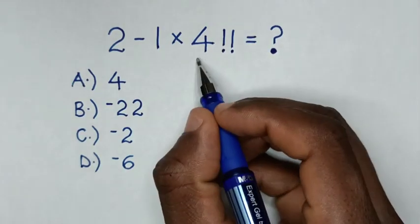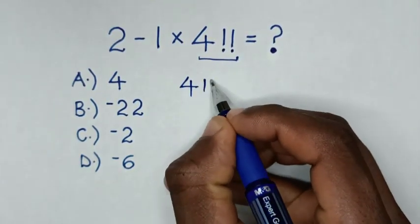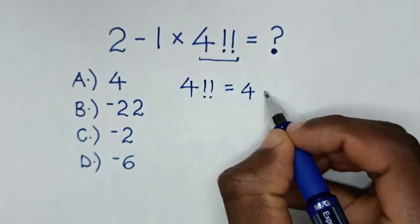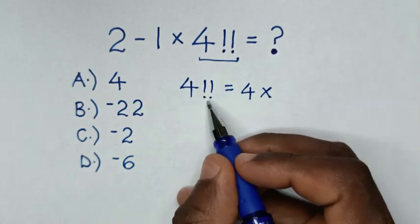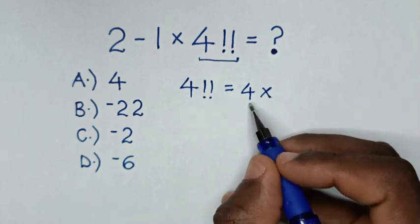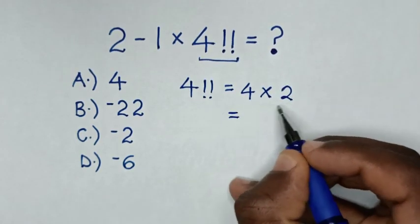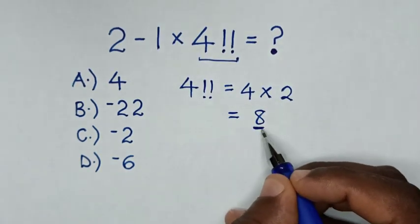So first we start to deal with this 4 double factorial. From 4 double factorial is equal to 4, then times, because in here it's double factorial, it means we reduce by 2. So it will be 4 minus 2 is 2. Then it will be equal to 4 times 2 is 8. So this is the value of 4 double factorial.